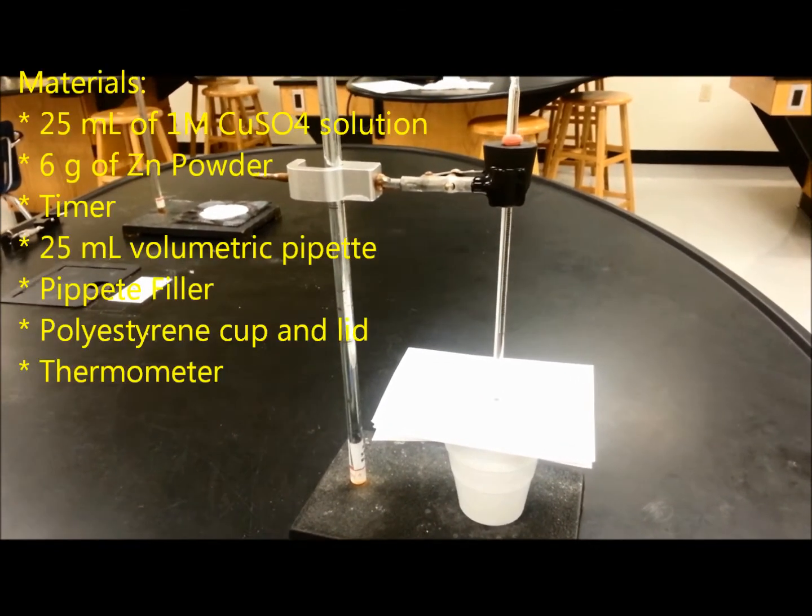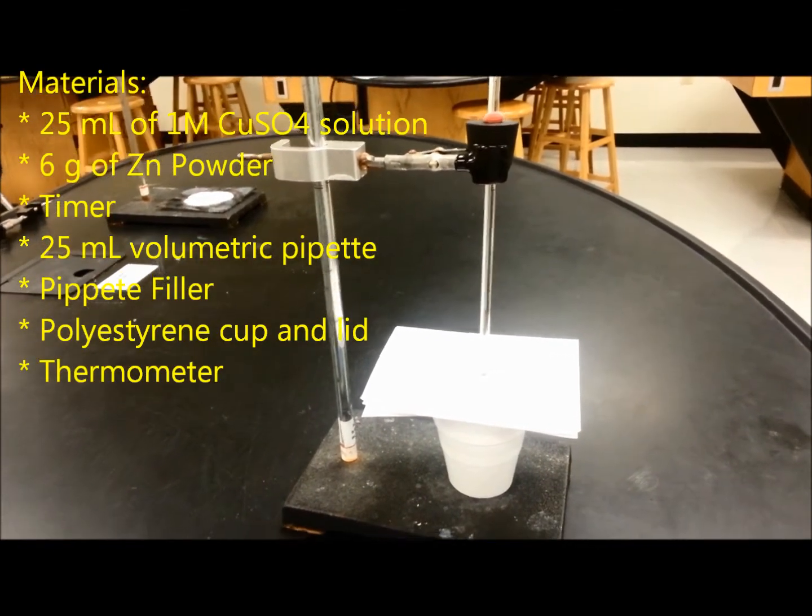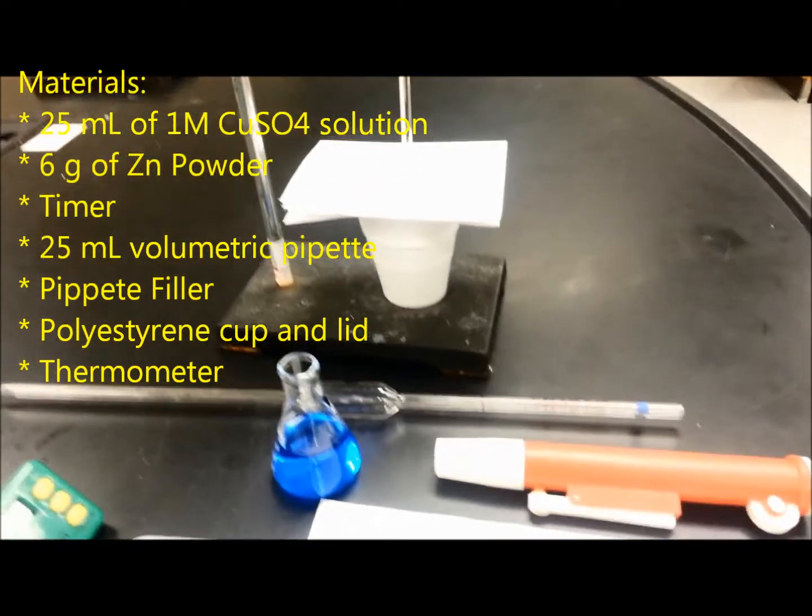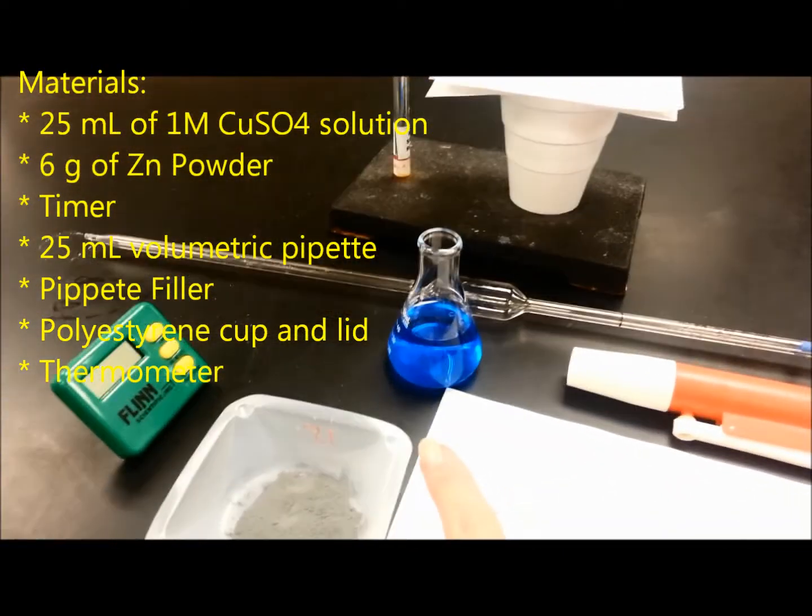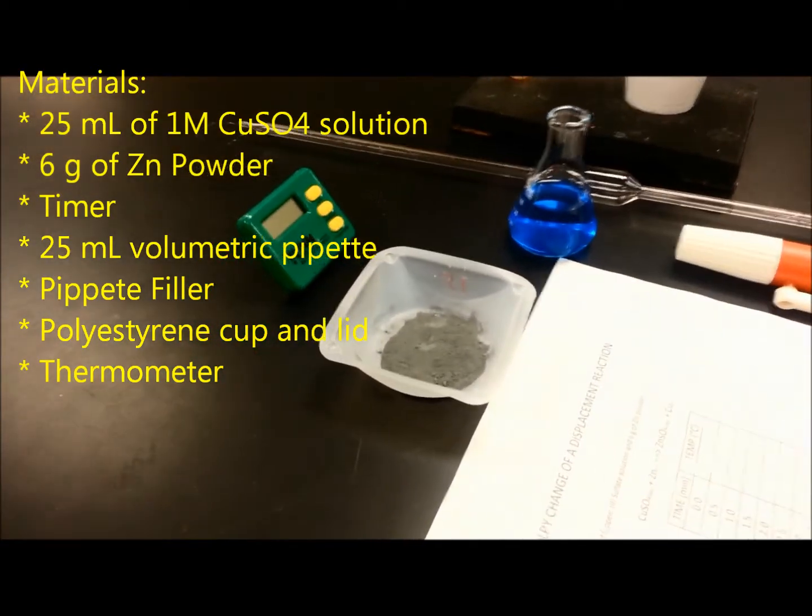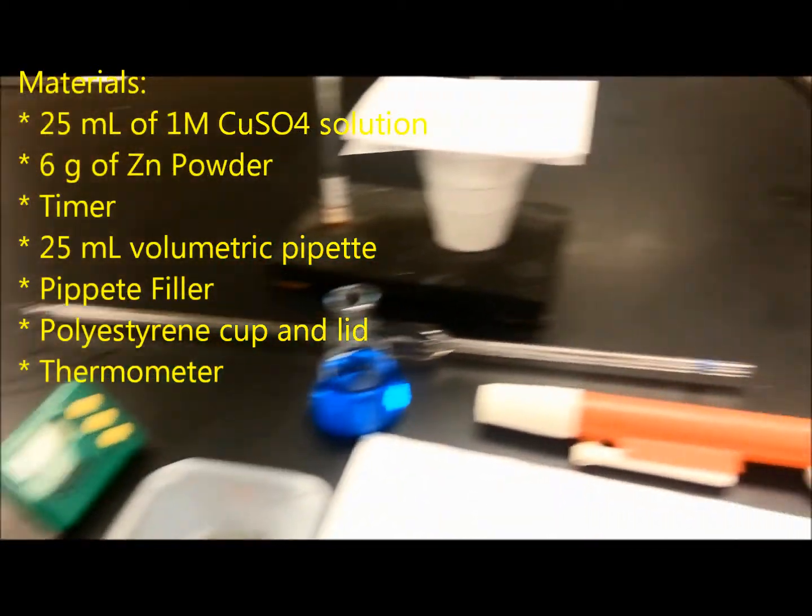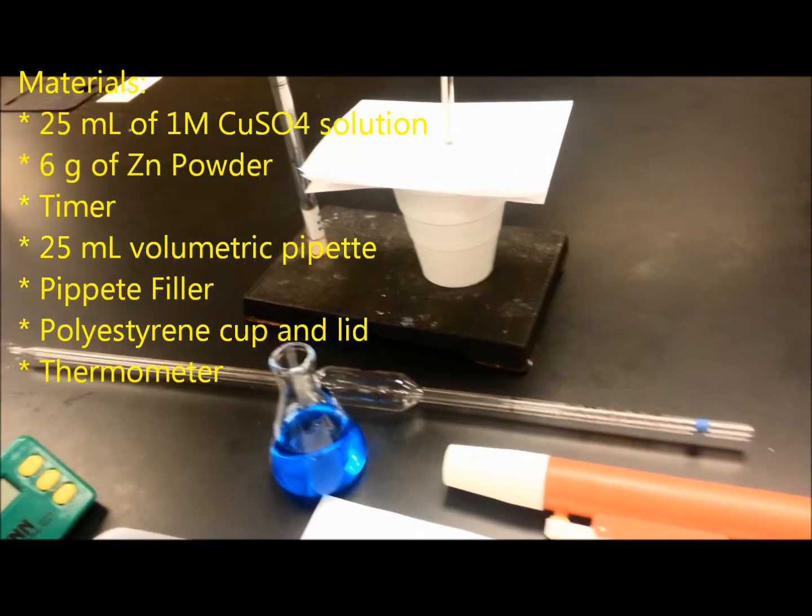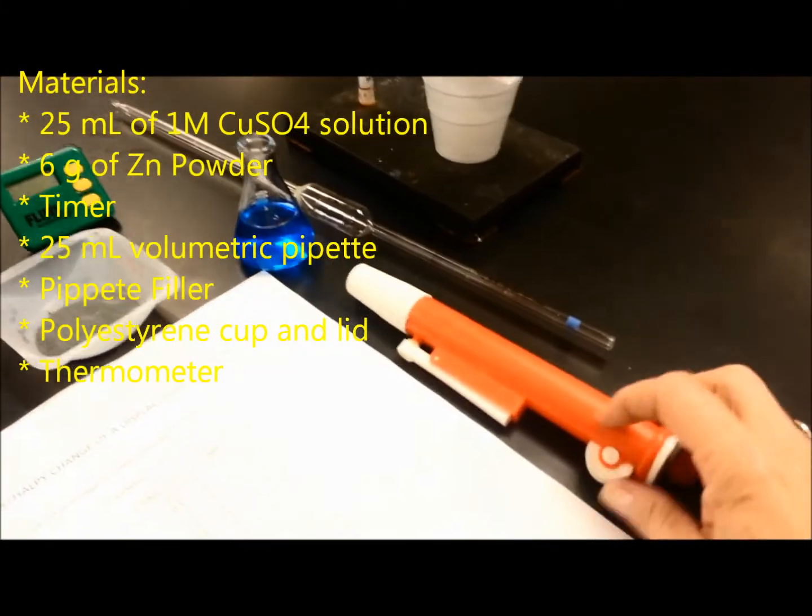Enthalpy change of a displacement reaction. For this lab, we're going to need 25 milliliters of copper sulfate solution and zinc powder, a timer, a pipette, 25 milliliters, and a pipette filler.